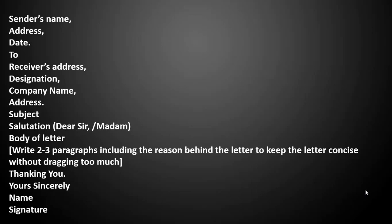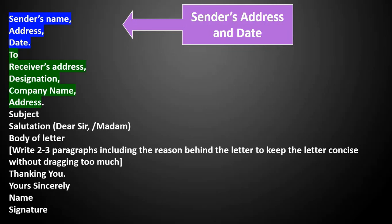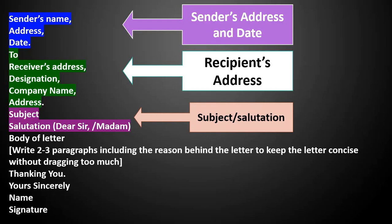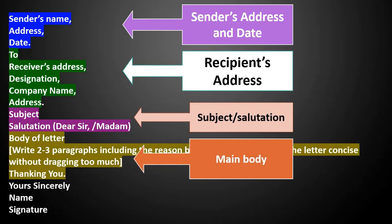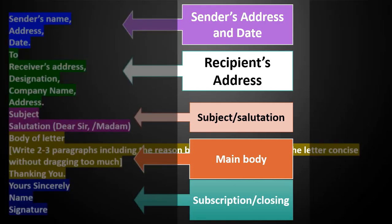There are five parts and we will divide them according to how we are marked for letter writing. First: sender's name, address and date — we call it sender's address. Second: 'To' or receiver's address, designation, company name or address — we call it recipient's address. Third: subject or salutation. Fourth: body of letter or main body. Fifth: 'Yours sincerely', name and signature — which is the subscription or closing.